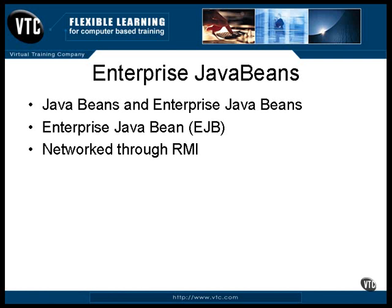One important aspect of an EJB is that the call to a method is a network operation. Internally, EJBs use RMI, which is the Java Standard Remote Method Interface. This way, you can call a method of the Bean from anywhere. Roughly, it works like this.